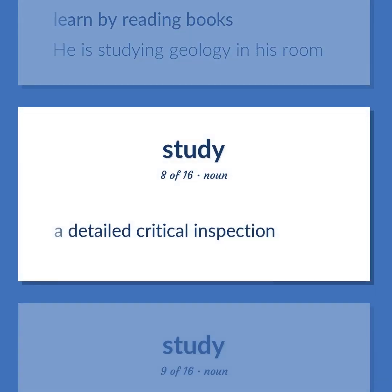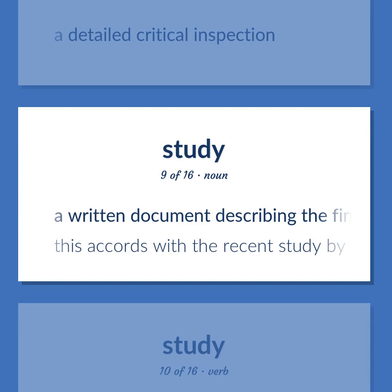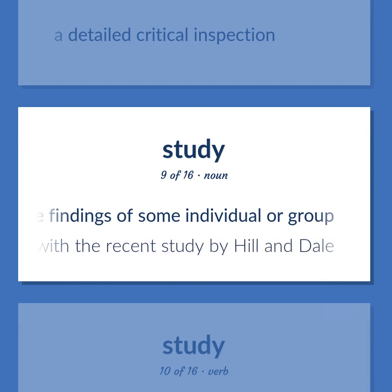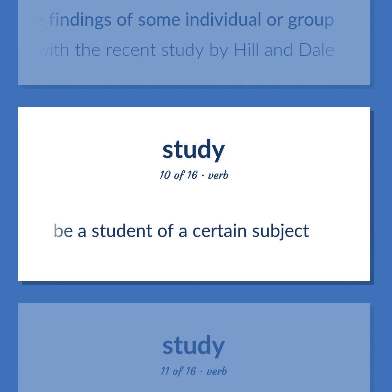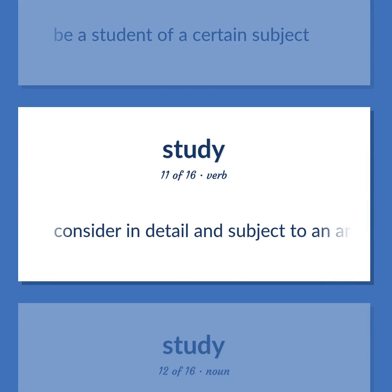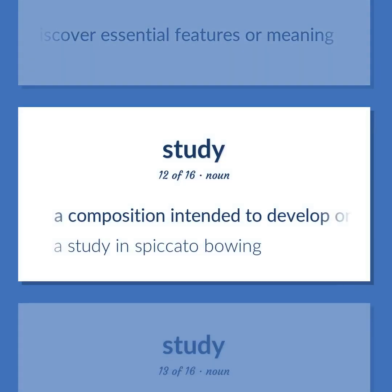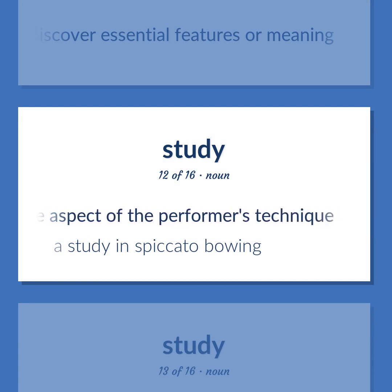A detailed critical inspection. A written document describing the findings of some individual or group. This accords with the recent study by Hill and Dale. Be a student of a certain subject. Consider in detail and subject to an analysis in order to discover essential features or meaning. A composition intended to develop one aspect of the performer's technique. A study in spiccato bowing.